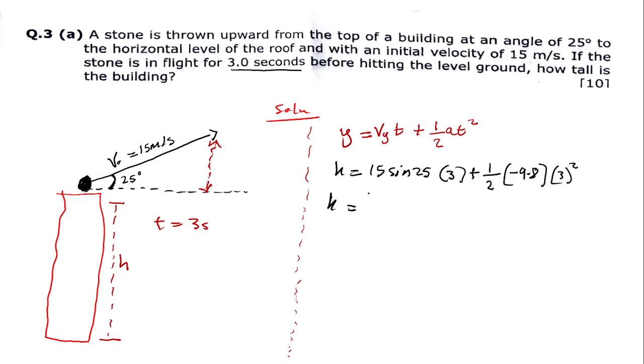Then you can have height is simply equal to 15 sin 25, which gives you something like 6.34 times 3, and then this will be minus one-half times 9.8 times 3 squared. With that being said, you're going to have h is simply equal to 6.34 times 3 minus 4.9 times 9.